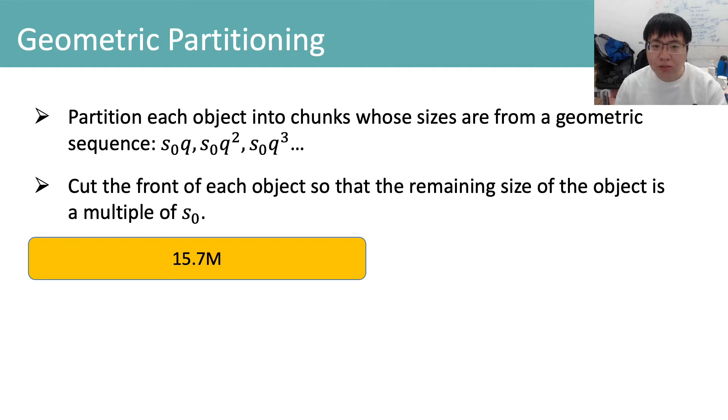If we have an object whose size is 15.7MB, we first cut 3.7MB from it so that the remaining 12MB is a multiple of 4MB. Then we partition the remaining part into a 4MB chunk and an 8MB chunk.